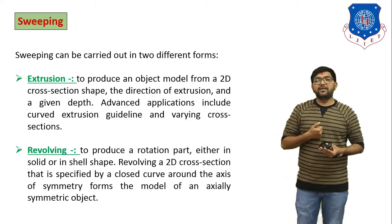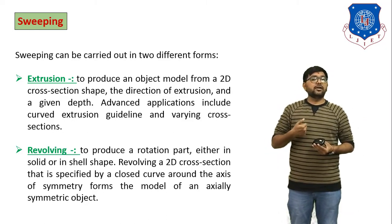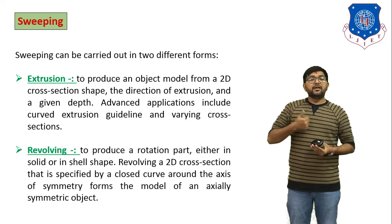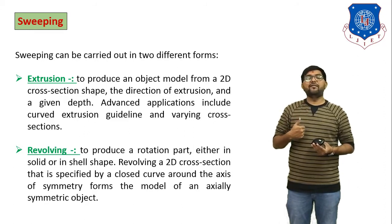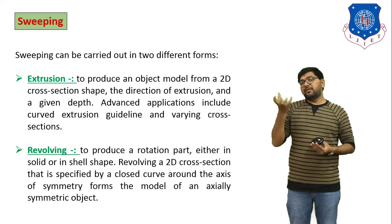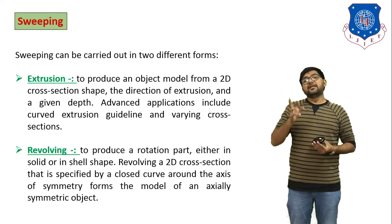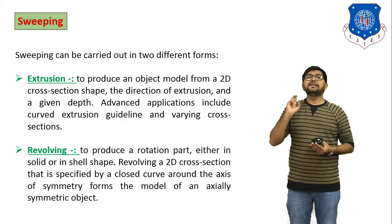Revolving uses the sweeping feature to produce rotation parts either in solid or in shell shape — shell meaning a hollow shape. It works by revolving a 2D cross section specified by a closed curve around an axis of symmetry to form a model of an axially symmetric object. Once you generate an object using revolving, the object is symmetric, meaning both sides of the axis are the same.